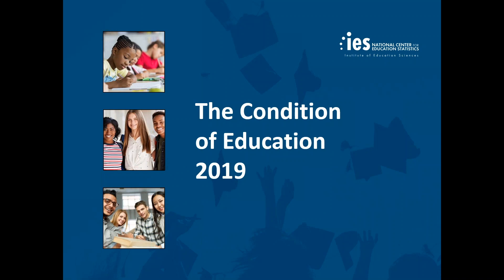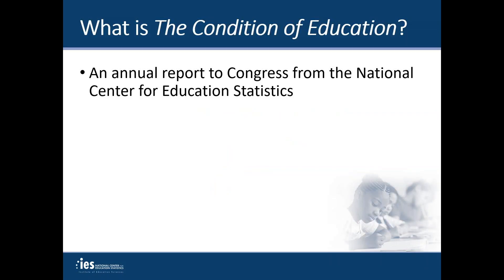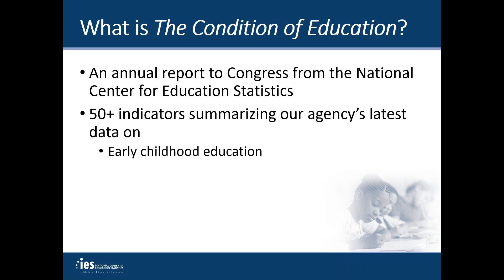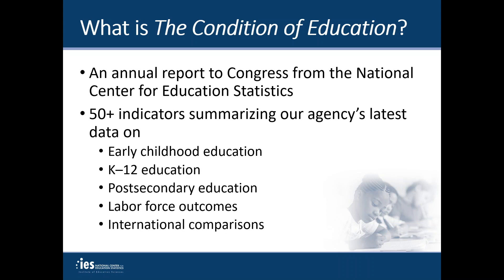Thank you for joining me for a briefing on the Condition of Education 2019. I'm Joel McFarland, and I serve as the project officer and lead author for this report. In this presentation, I will discuss some of the new analyses and notable findings from this year's report. The Condition of Education is a congressionally mandated annual report that NCES releases each year by June 1st, organized into roughly 50 indicators that summarize our latest data on a wide variety of topics, from early childhood through post-secondary education, as well as labor force outcomes and international comparisons.